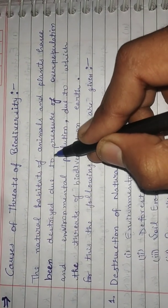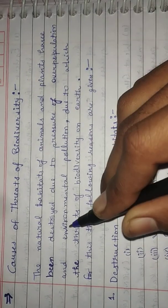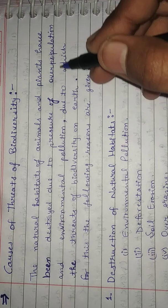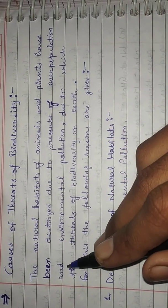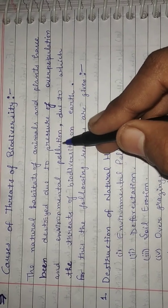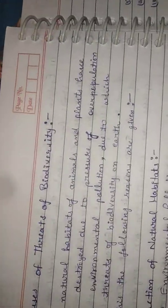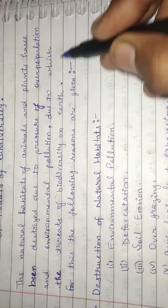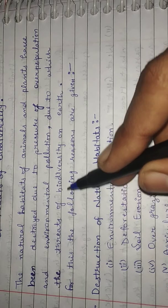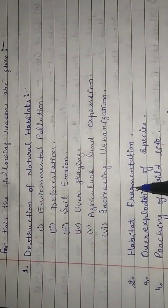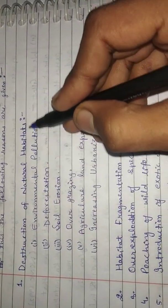The natural habitats of animals and plants have been destroyed due to pressure of overpopulation and environmental pollution. There are two main causes due to which the threats of biodiversity on earth. For this, the following reasons are given. First is the destruction of natural habitat.